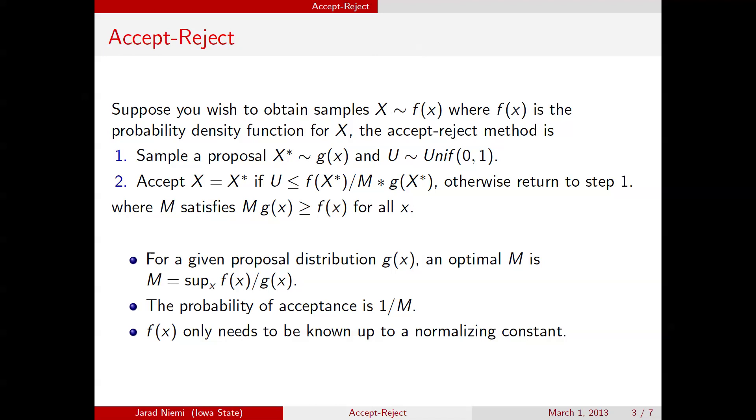Just a few notes here. The first is that we can actually, for a particular proposal g and a target f, we can actually find what the optimal m is. The second is that if we know this m, we can find, and using this m, we can find the probability of acceptance, that's just 1 over m.